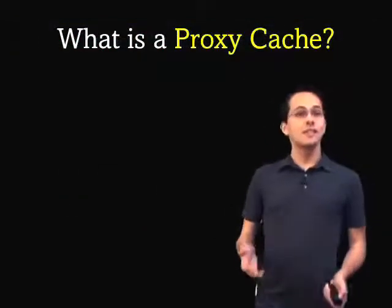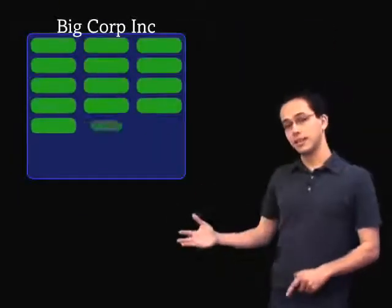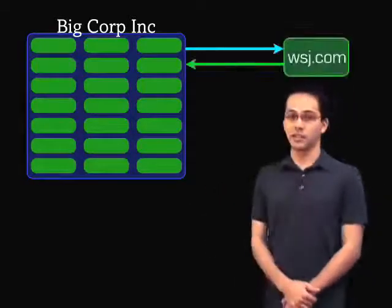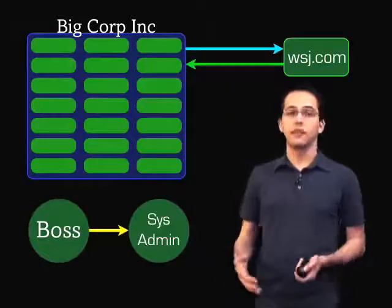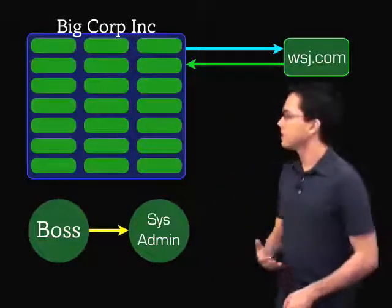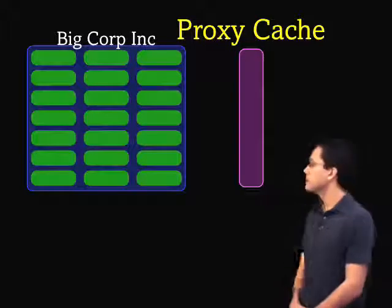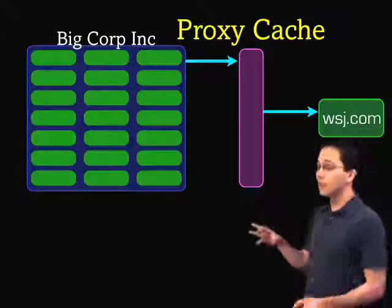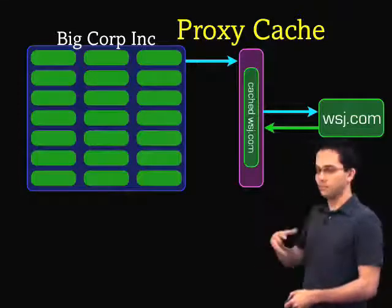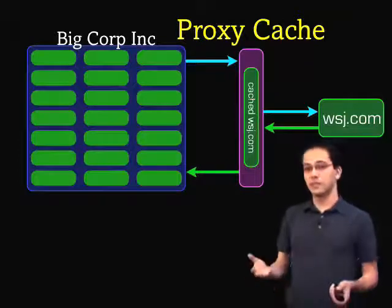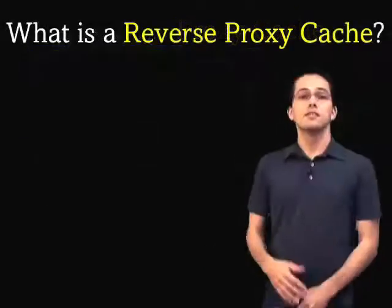Before we understand what a reverse proxy cache is, we need to understand what a regular proxy cache is. Here we've got a corporation with lots of people, and it so happens that a lot of people visit wallstreetjournal.com. The boss goes to the sysadmin and says, we need to reduce network traffic. What the sysadmin does is install a proxy cache. The next time somebody requests wallstreetjournal.com, they pass through the proxy cache, the response gets stored there, and the next user loads it directly out of the proxy cache.